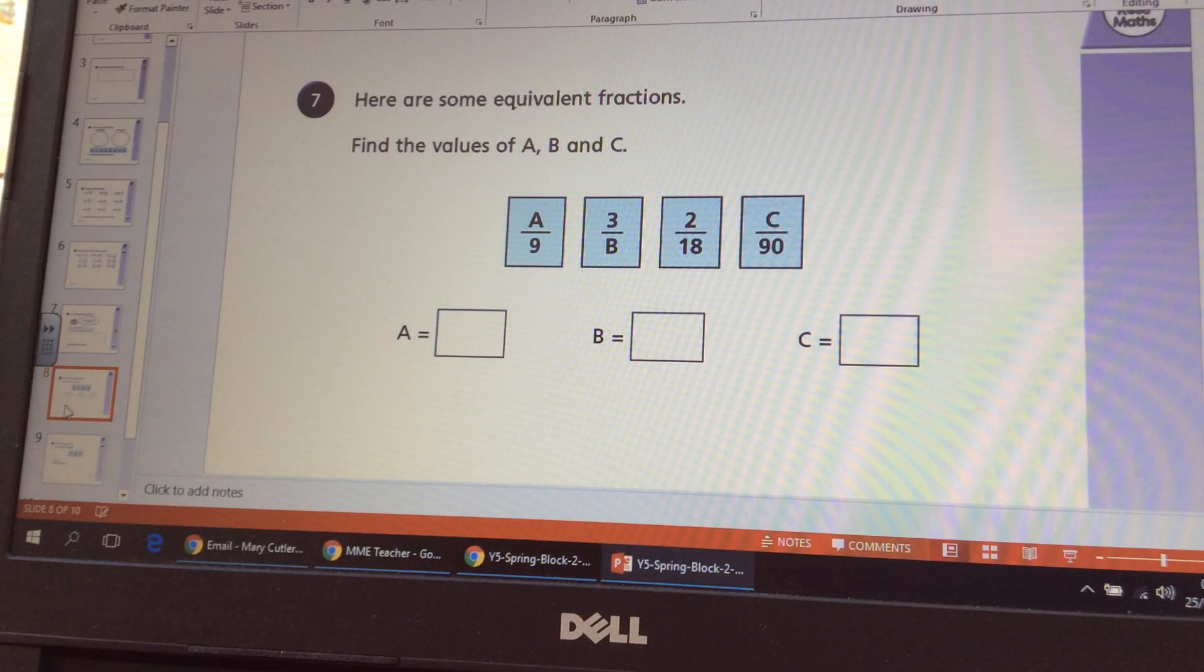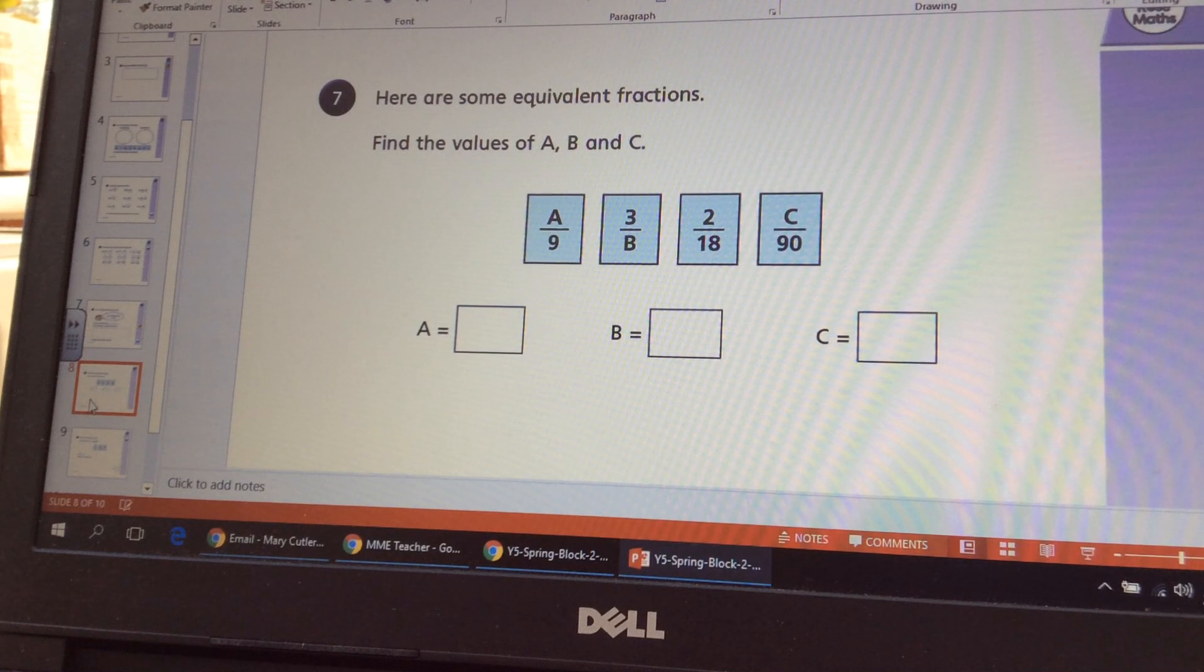Here I would look at the numbers I do know. I've got a numerator and a denominator, so I know two-eighteenths. If I go back there to the first box, I don't know the numerator but I know the denominator is nine. So I know that I have divided eighteen by two to get nine, so then I would need to divide the numerator, the two, by two to get A. Once I've got that, that should help me then with my knowledge of tables to work out the other missing amounts.